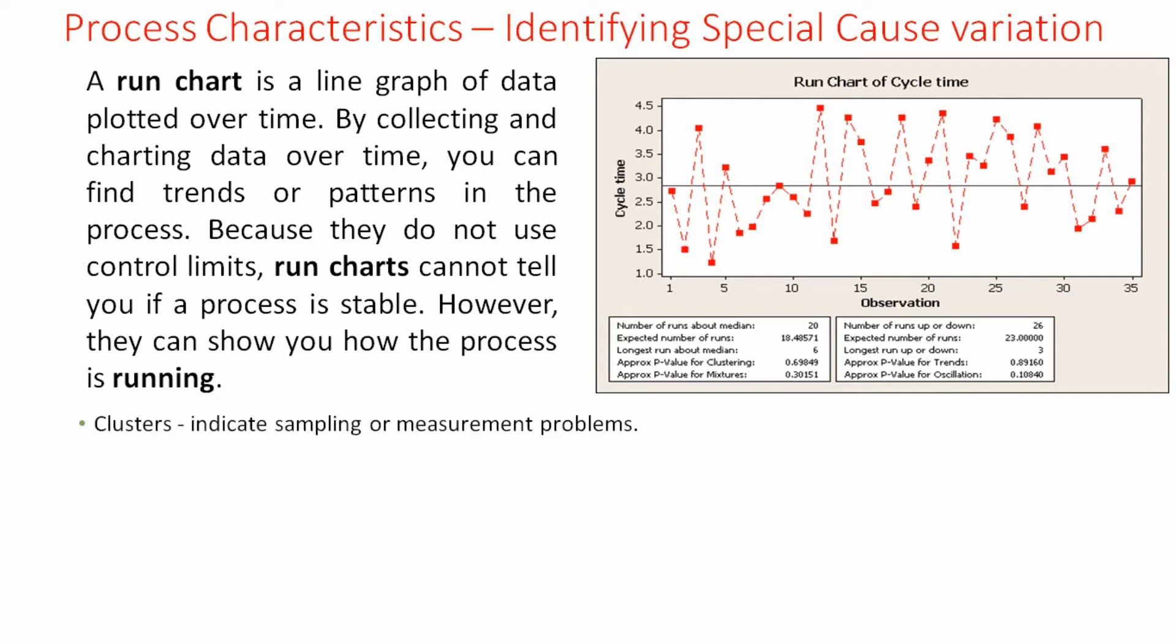Clusters: It indicates sampling or measurement problem. Mixtures: It indicates mixed data from two populations. Example, you have a cycle time data for a team which has two subgroups. One set of people are working in the process for more than three years and the other set of people are recently joined within zero to six months. So there is difference in the cycle time that they are taking to process the transactions. And if you plot both the data sets together on the graph it will give you a problem of mixtures.